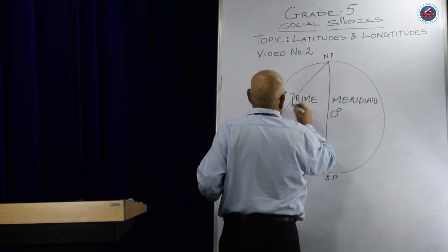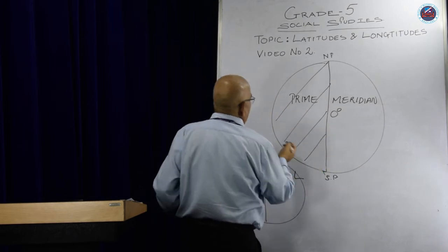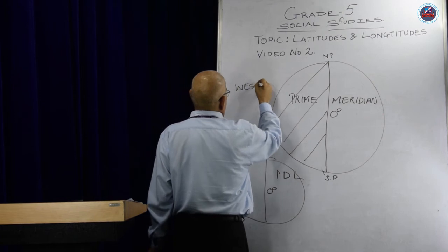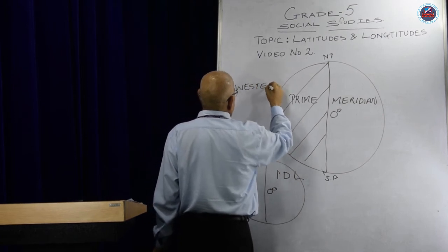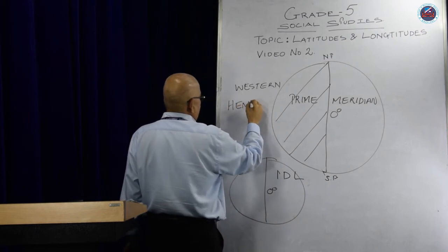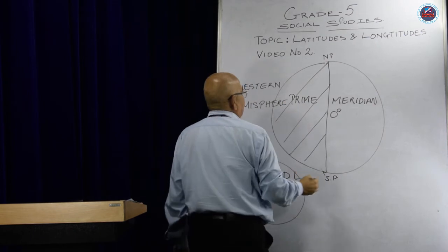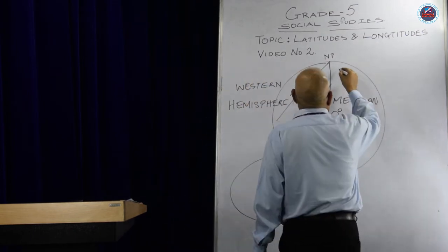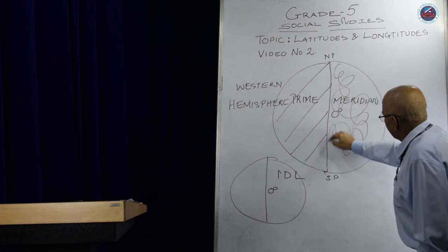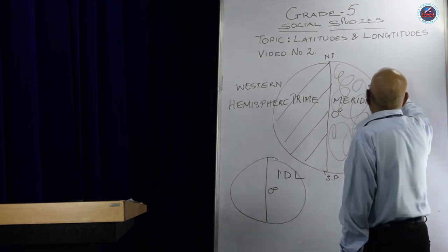This part of the earth is known as the western hemisphere, and the other part of the earth is known as the eastern hemisphere.